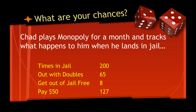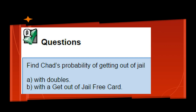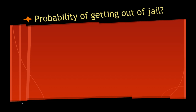We have this gentleman called Chad who decides to play Monopoly for a month and track what happens to him when he lands in jail. He lands in jail 200 times. He gets out with doubles on his dice 65 times. He gets a get out of jail free card 8 times out of 200. And then he pays $50 the remaining 127 times. Now, what is Chad's probability of getting out of jail if he rolls doubles, and if he gets a get out of jail free card? This is an important question because it's costing him $50 each time he doesn't get one of those.